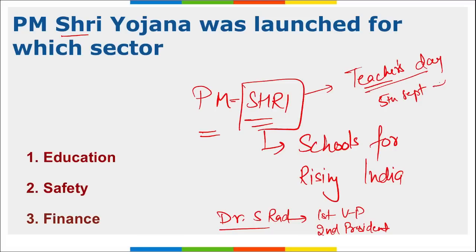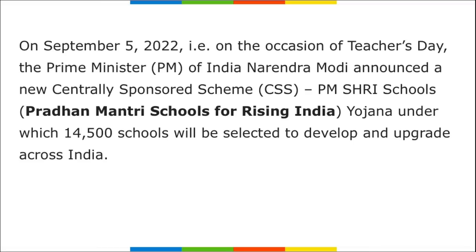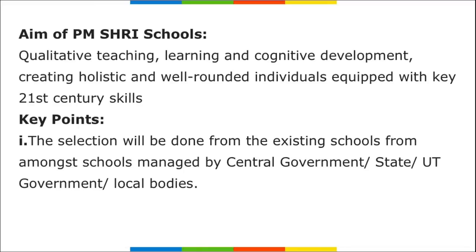Under PM Shri - Pradhan Mantri Schools for Rising India - 14,500 schools will be selected to be developed and upgraded across India (Pan India). These schools will be equipped with modern infrastructure including labs, smart classes, libraries, school equipment, and art rooms. These schools will also be equipped as green schools with water conservation, water recycling, energy-efficient infrastructure, and integration of organic lifestyle in curriculum.